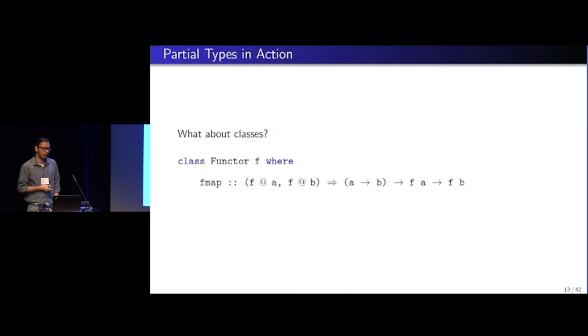What about classes? Well, so functor type class has an fmap function. And that would only make sense if f at A and f at B are like preconditions to that function, right? That's only if these constraints are satisfied is when the fmap function would be satisfied. And this exactly is not just syntactic, but we see from the previous kinding rule that this needs to hold.